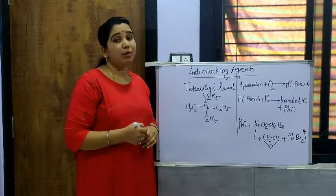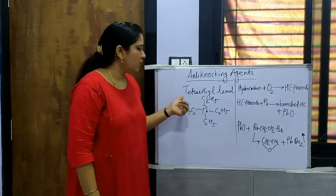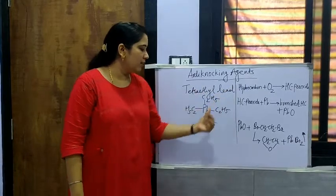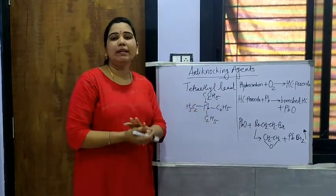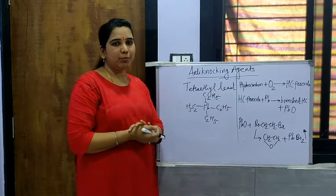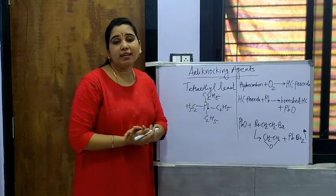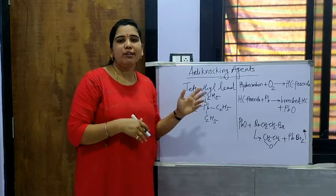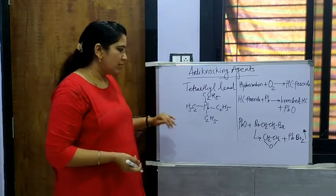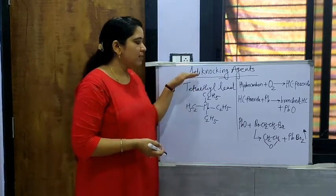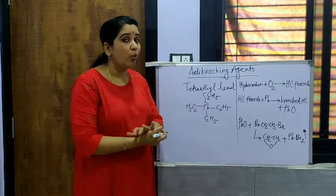Now here, a very important example of an anti-knocking agent is tetraethyl lead. So this lead, Pb, is attached with four ethyl type of molecules. So here there is tetraethyl lead — we can also use tetramethyl lead. This tetraethyl lead is an important anti-knocking agent. Now we will see how it works.